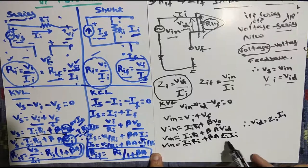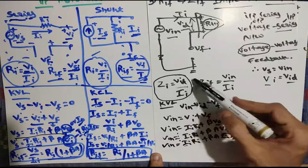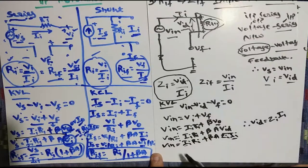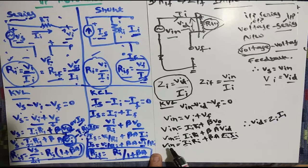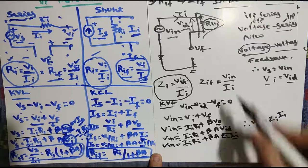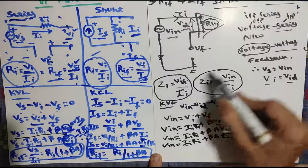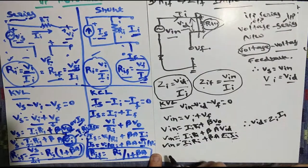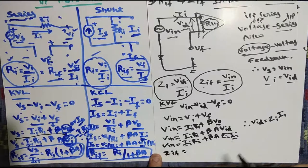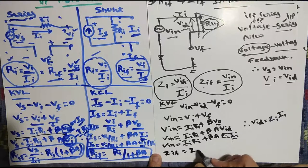The aim is simple: take II as common because we require Z equals VI by II. Our aim is to find Zif, which is nothing but Vin by II. You can do Vin by II yourself. You will get Zif is equal to Zi into (1 plus beta·A).